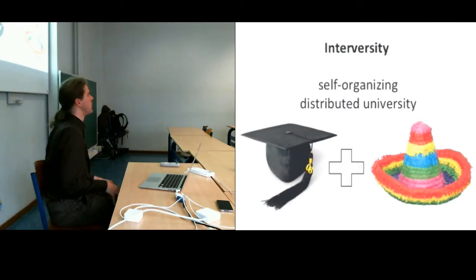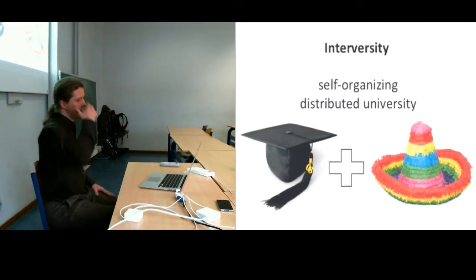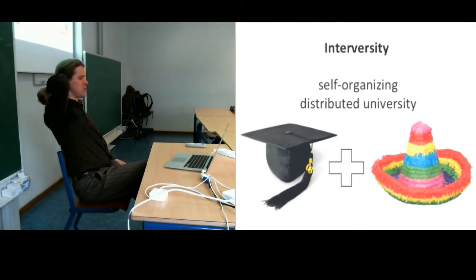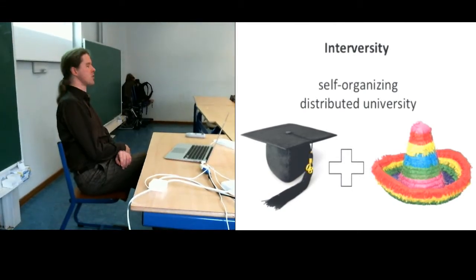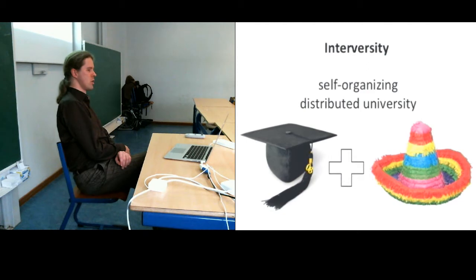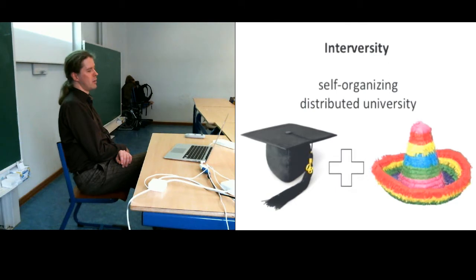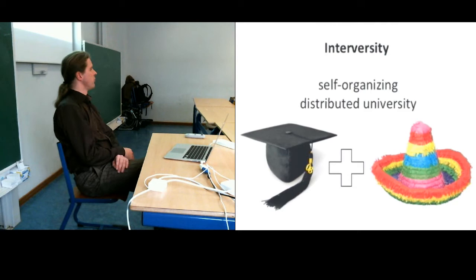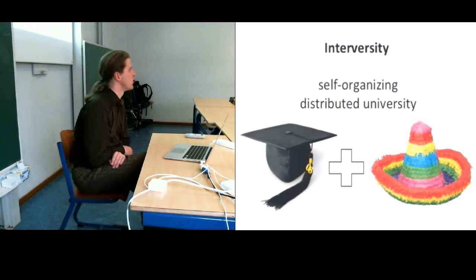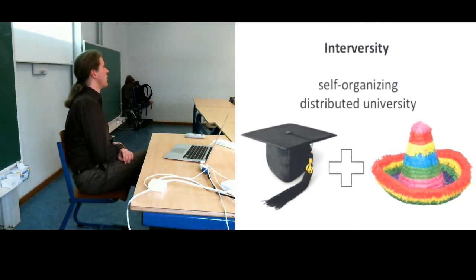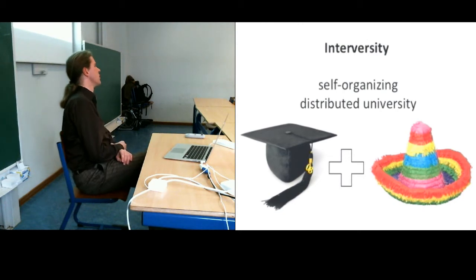There's a sombrero on the screen. The whole idea of the Interversity is to work on a next-generation university, which should be self-organizing and distributed, but also — and that's why the sombrero is there — playful and colourful. You can ask if that's really very academic, and I'll try to create an argument that it's actually a very natural transition that's happening.